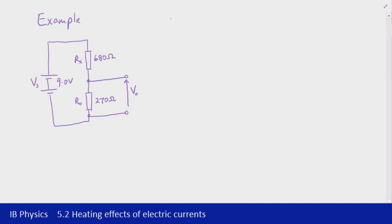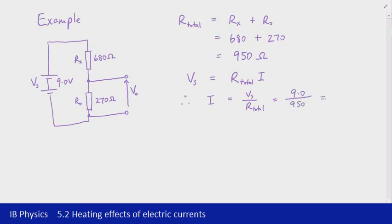The first step is to find the total circuit resistance, and we can do that using resistors in series. So that's just going to be Rx plus R0. Substitute those values in of 680 and 270, and we get a total circuit resistance of 950 ohms. Now we can use Ohm's law to figure out what the circuit current is going to be. Vs equals the total resistance times I. The current is going to be equal to Vs over R total, and that's 9.0 volts over 950 ohms, which gives us 0.0095 amps, which we can write as 9.5 milliamps. Notice how small the circuit current is here.